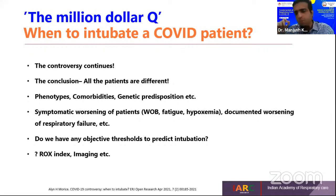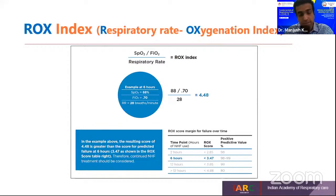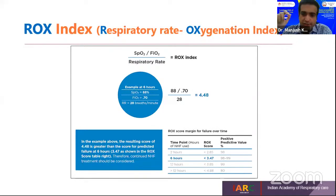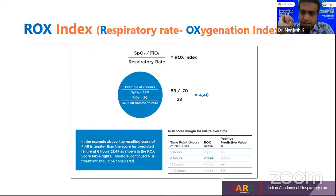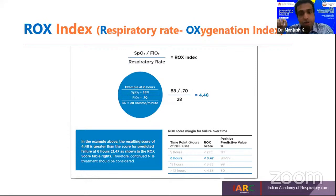Do we have objective thresholds to predict intubation? Looking at the ROX index — the respiratory rate oxygenation index — it is calculated as SF ratio divided by respiratory rate. We obtain ROX index values for high-flow nasal cannula patients at various intervals: second hourly, sixth hourly, or twelfth hourly. If values fall below the ROX index threshold for that time duration, that indicates the patient is failing non-invasive respiratory support, and several papers support ROX index as a predictor for intubation.